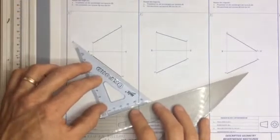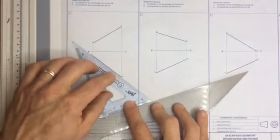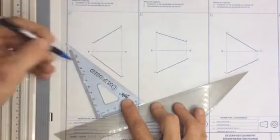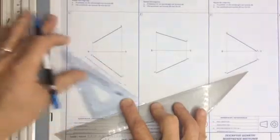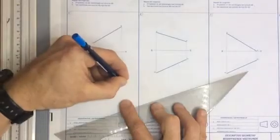I take my set square. I line it up on the edge over there. I move it down approximately 10 millimeters and I draw a line. That line I label it x1 y1.